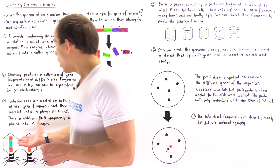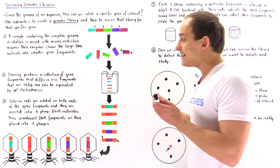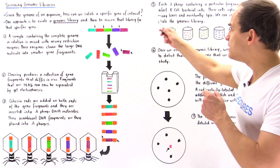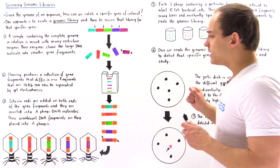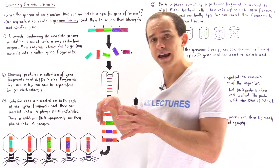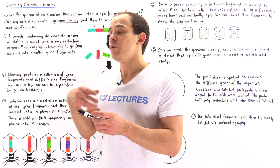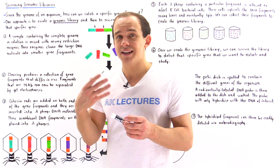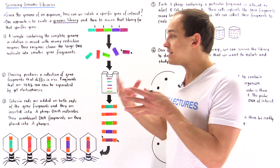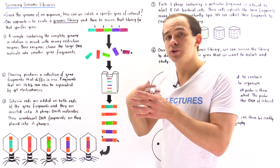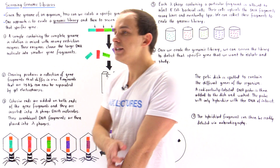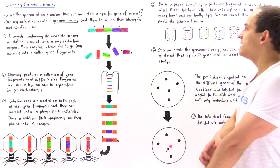Now we have an army of unique lambda phages, each containing their own unique recombinant DNA molecule. In step five, we infect the E. coli bacterial cells with these different types of lambda phages. Those bacterial cells will then reproduce and lyse, producing many, many copies of these different types of fragment DNA molecules.